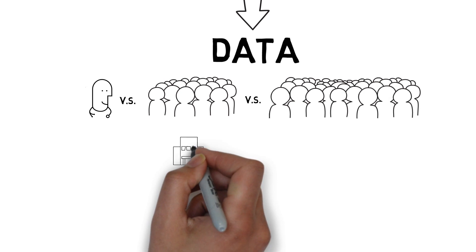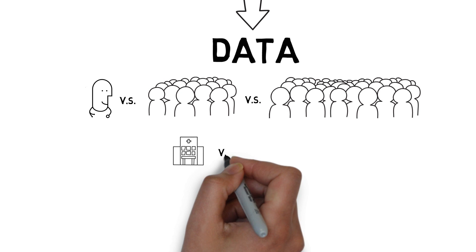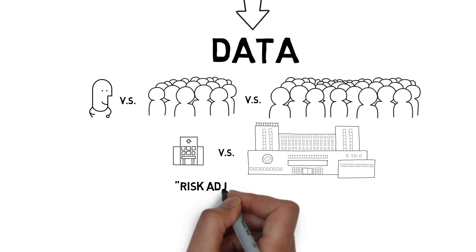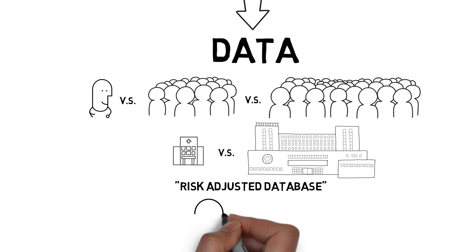Your data will be most valuable if we have a large comparison group. Additionally, it's important that the data are adjusted for differences between patients. This is called a risk-adjusted database and helps account for differences like premorbid conditions in your surgical patients.